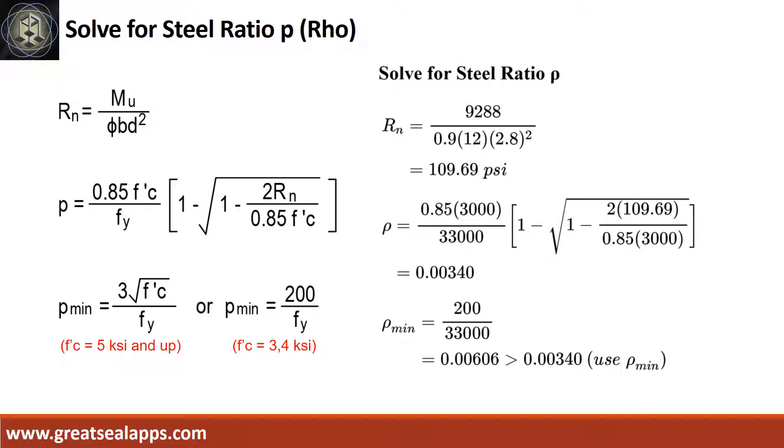Given MU equals 9,288. Resistance factor equals 0.9. B equals 12 and D equals 2.8. The beam design ratio RN equals 109.69 PSI. And reinforcement ratio rho equals 0.0034.